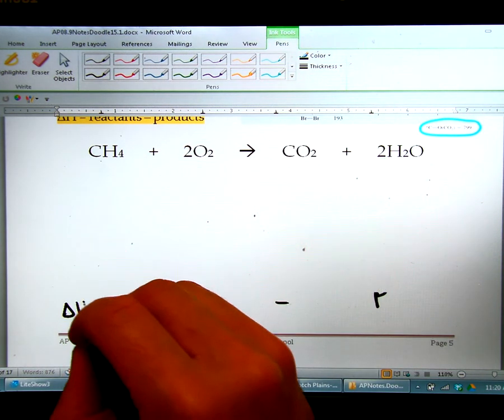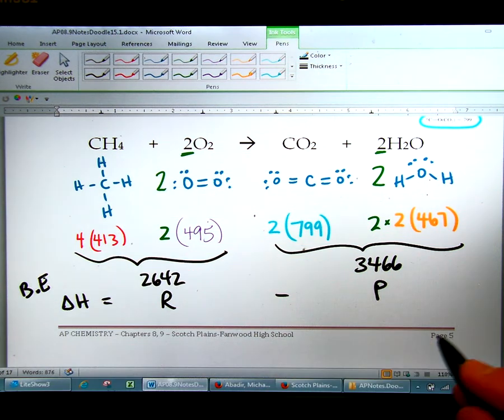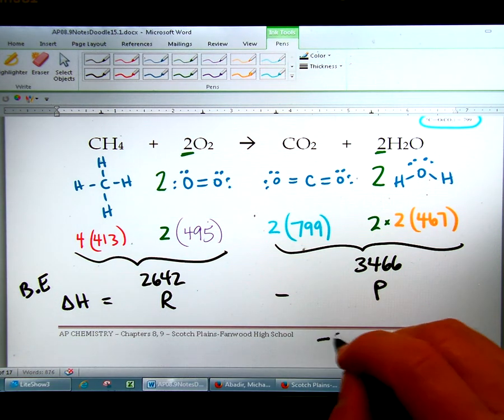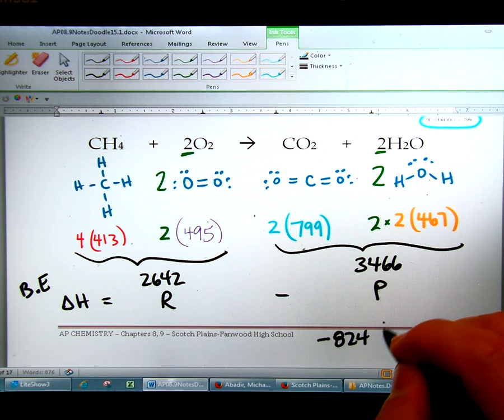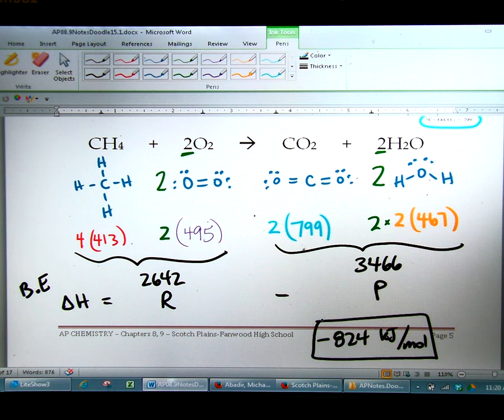It's always reactants minus products. Delta H equals that when it's bond energy. So just remember, bond energy, delta H, is reactants minus products. So when you take this minus this, you're going to get negative 824 kilojoules per mole, which makes sense that this is exothermic. It's exothermic because it releases heat.